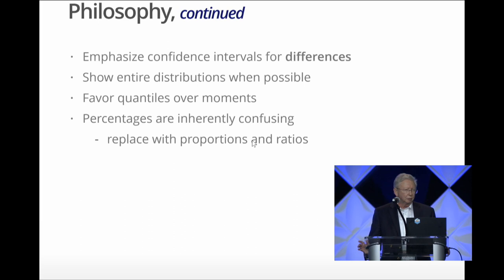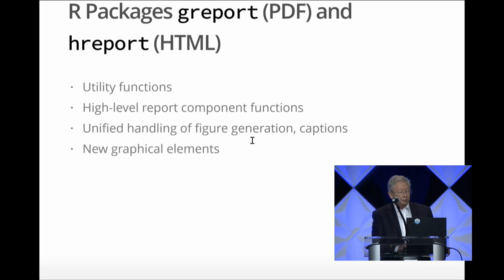Most studies where you're doing an A-B comparison, confidence intervals for A are not relevant to the design, and confidence intervals for B are not relevant to the design. They're actually inconsistent with a parallel group design. But the design is made to give confidence intervals for differences between A and B, and that's what we want to emphasize. We want to show the entire distribution when possible, favor quantiles over means and standard deviations. And I personally don't like percentages, and I do everything I can to get rid of percentages.